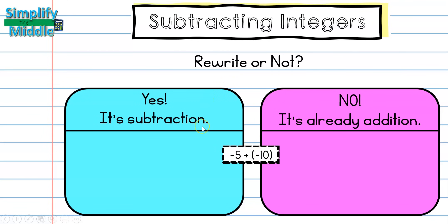Let's go ahead and sort these few cards into our columns of yes, we need to rewrite it because it's subtraction, or no, it's already addition. Negative 5 plus negative 10 is already addition, so we will not be rewriting that one. 6 minus 7—that is subtraction. Even though it doesn't have any negatives in it, I know I can't take 7 away from 6, so I should be rewriting this one as addition with add the opposite.